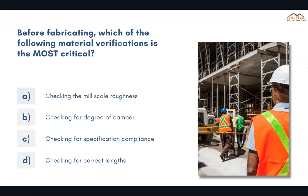Before fabricating, which of the following material verifications is the most critical? The correct answer is C: checking for specification compliance.